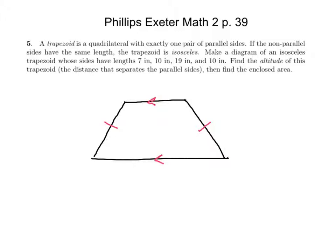Now it says make a diagram of an isosceles trapezoid whose sides have lengths 7, 10, 10, and 19. So that would mean 7 would be my top there, my 10 would be my sides that are equal, and 19 is the base. Find the altitude of the trapezoid. Now the altitude is the distance that separates the parallel sides. We usually want to draw it from this vertex, maybe there.